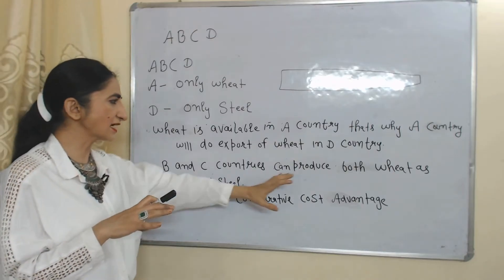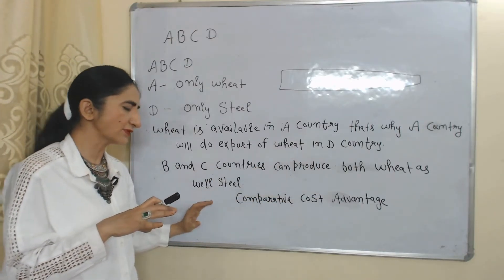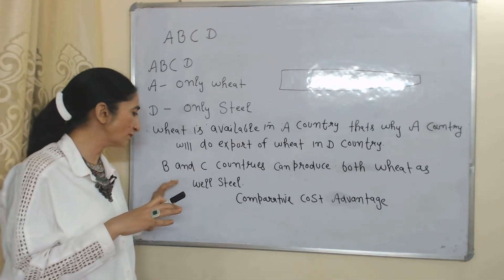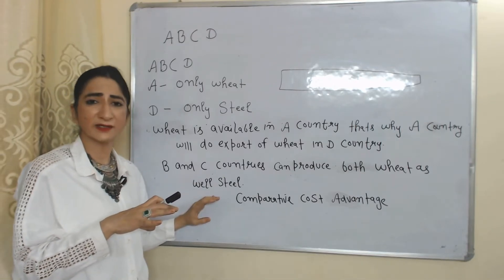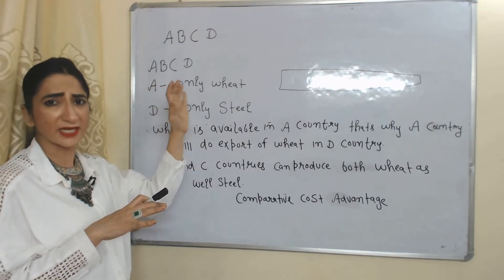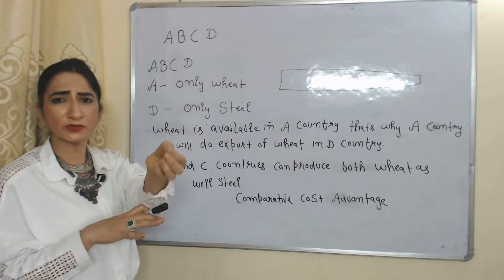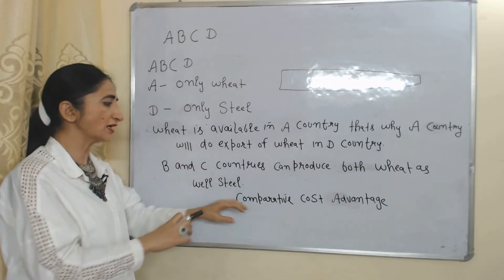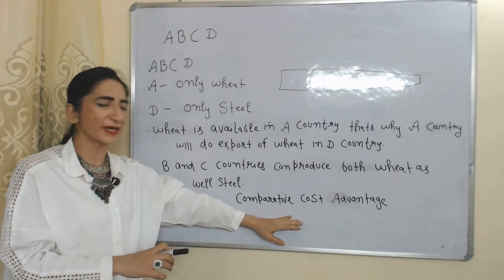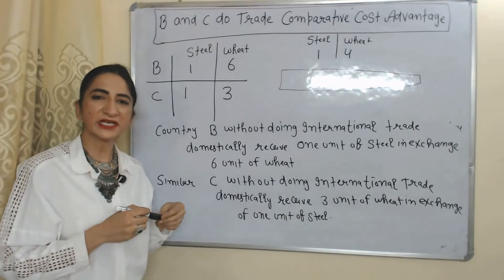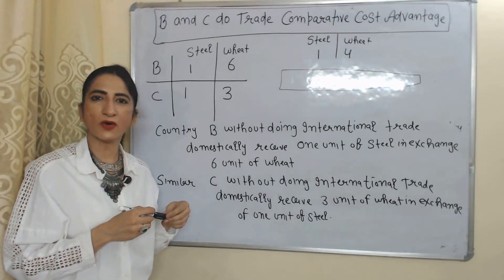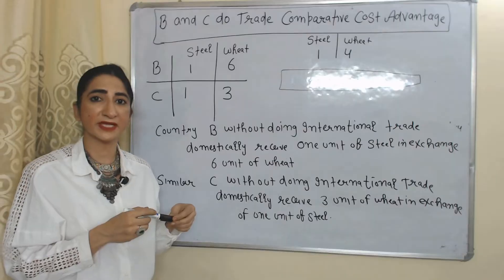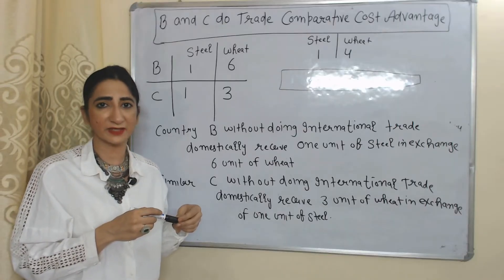But countries B and C can produce both goods — wheat as well as steel. That's why the trade patterns of B and C are different compared to A and D, which can produce only one good. Countries B and C will do trade based on comparative cost advantage. Now we'll see how countries B and C will do international trade based on comparative cost advantage.